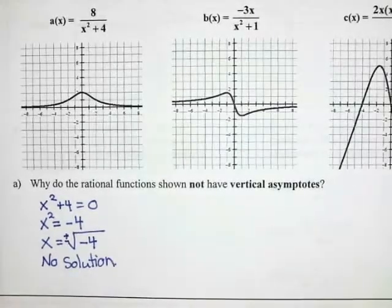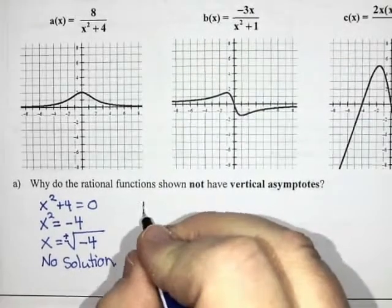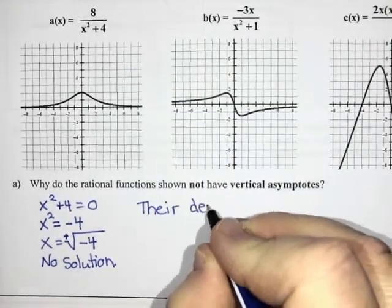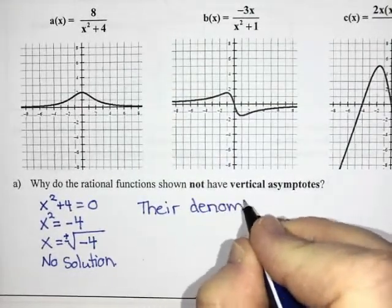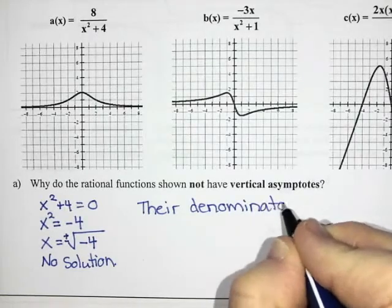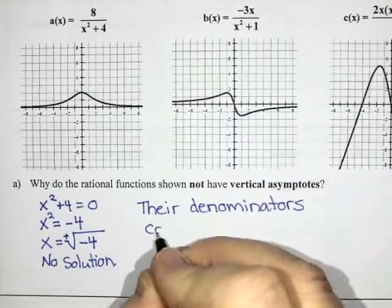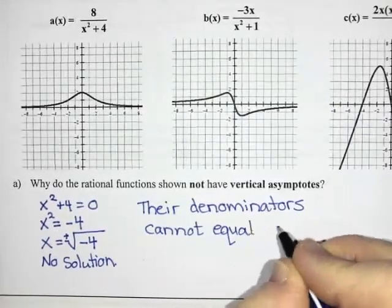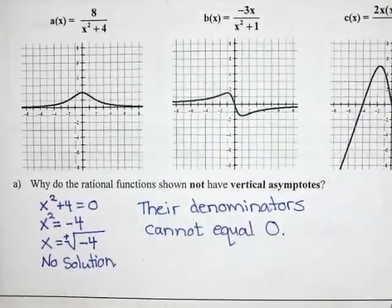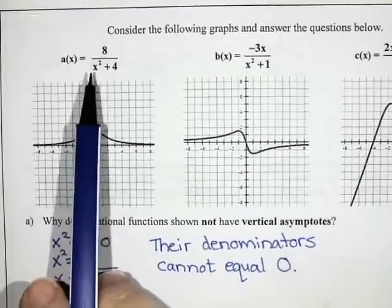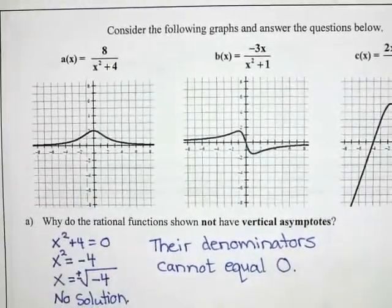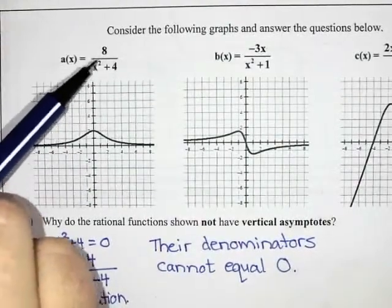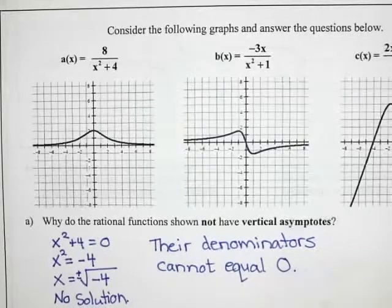So it says, why do they not have vertical asymptotes? I'm going to say their denominators cannot equal zero. Right? There is no number that I could put in this equation that would give me a zero. Right? Because anytime I square a number, it's always positive. And then a positive plus four will still be a positive number that's not a zero.